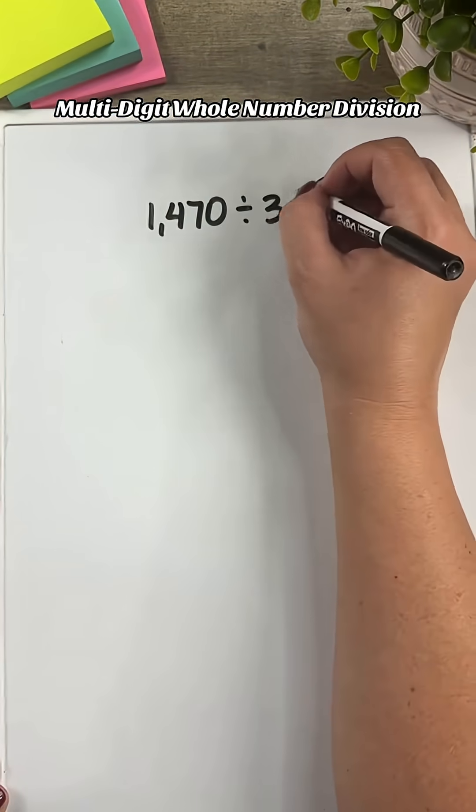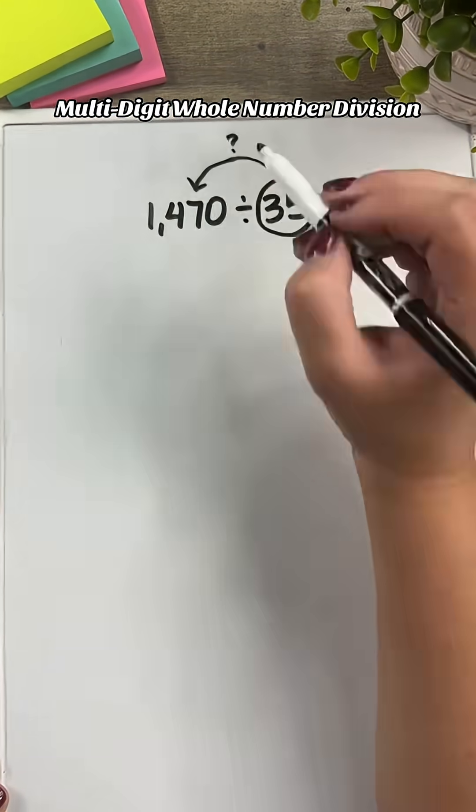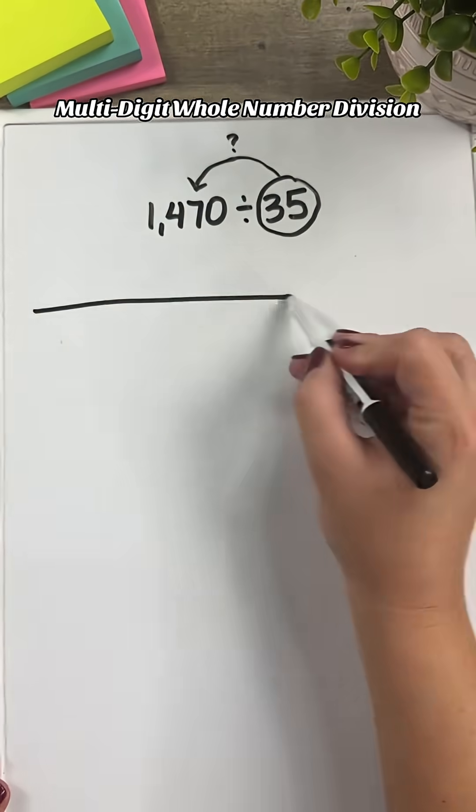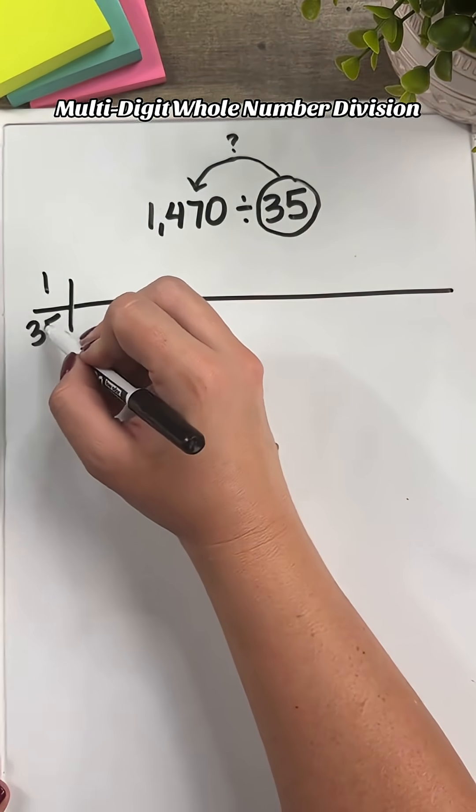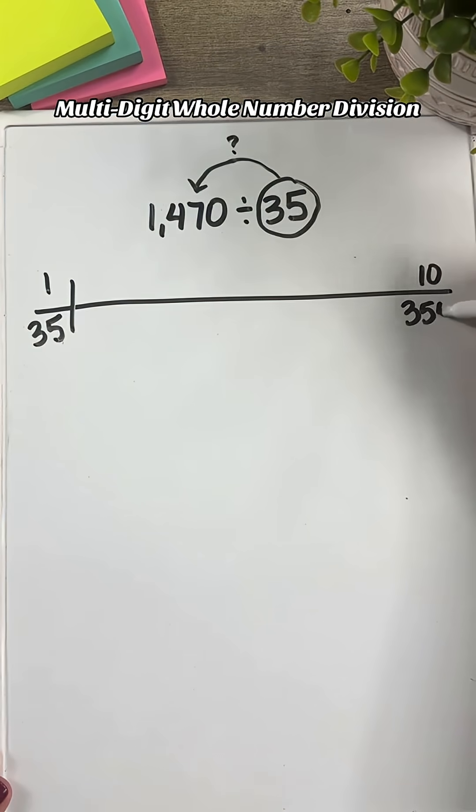Here are two strategies that you can relate when doing multi-digit division. I want to see how many 35s are in 1,470. Let's use a table to keep track of our thinking.